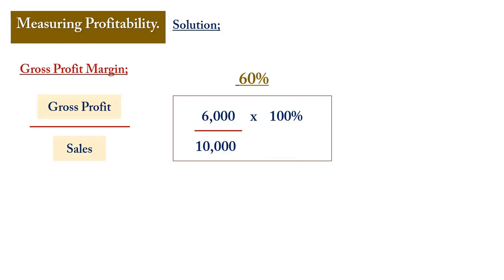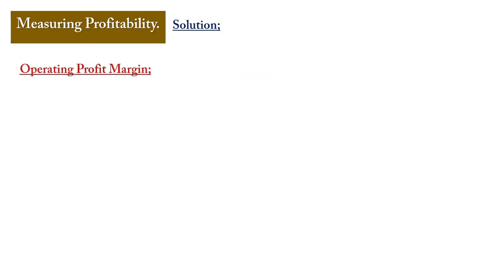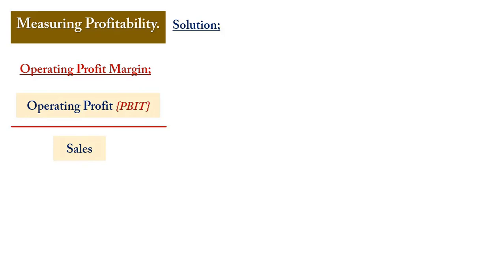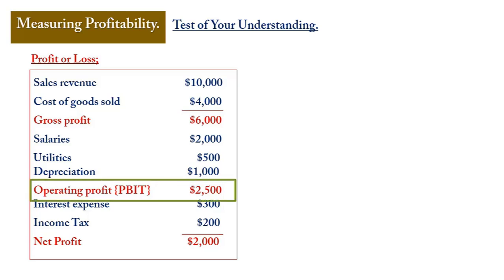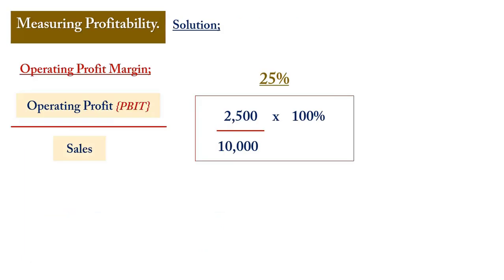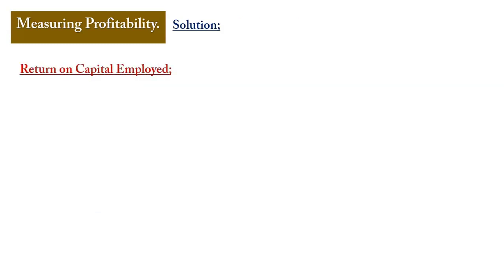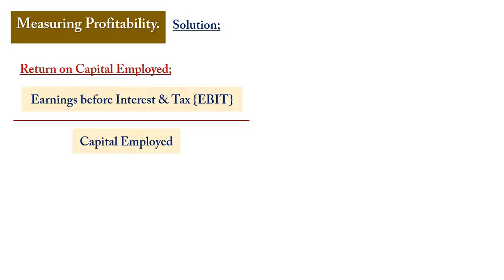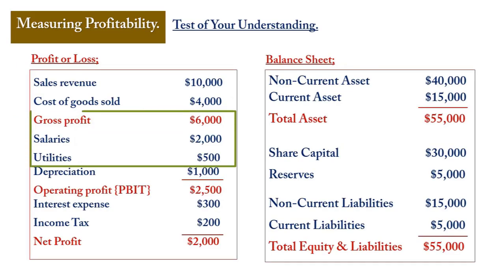For operating profit margin — operating profit divided by sales — the operating profit of £2,500 divided by sales of £10,000 gives an operating profit margin of 25%. For ROCE, using earnings before interest and tax divided by capital employed: the earnings before interest and tax excludes depreciation (as it is notional) but includes salaries and utilities which are monetary items.